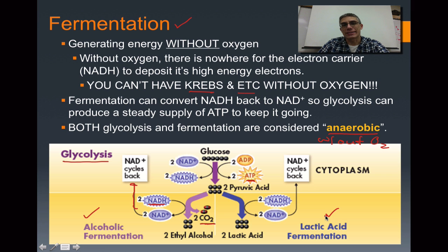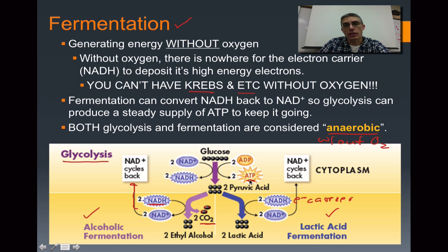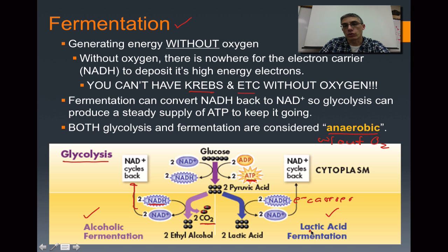Lactic acid fermentation does exactly the same thing — it produces electron carriers, and you take the energy found in these electron carriers back up to glycolysis so it can continue to produce ATP. Lactic acid fermentation is one we talked about in class: the lactic acid burn. If you exercise really hard for maybe the first minute or two and you feel that burn, that's the lactic acid being produced by your muscle cells. You can also think about lactic acid in terms of producing certain foods — yogurts, for example, use certain types of bacteria that actually produce lactic acid, which gives that sour or tart taste to some yogurts. For organisms that do not have oxygen in their environments, they're going to utilize fermentation to help keep glycolysis going to produce ATPs.